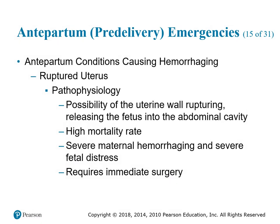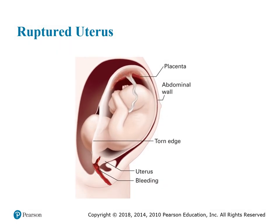Ruptured uterus involves the possibility of the uterine wall rupturing and releasing the fetus into the abdominal cavity. This causes a high mortality rate, severe maternal hemorrhaging, severe fetal distress, and requires immediate surgery. The placenta itself tears, causing the baby to be expelled into the abdominal cavity. Surgery is the only way to achieve survivability. Assessment includes history of previous uterine rupture, history of abdominal trauma, more than two previous births, prolonged difficult labor, constant severe abdominal pain, and signs and symptoms of shock.